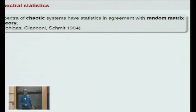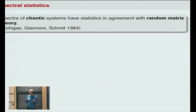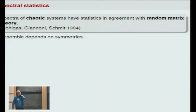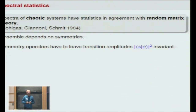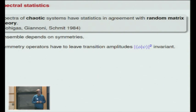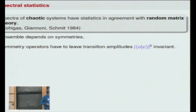So a little bit of motivation. We expect that chaotic quantum systems have spectral statistics in agreement with predictions by random matrix theory. But then the question is which ensemble from random matrix theory should we actually use? The choice of the ensemble should depend on the symmetries of the system. A symmetry would be an operator commuting with the Hamiltonian, but we are also interested only in symmetries that leave the transitional amplitudes invariant.